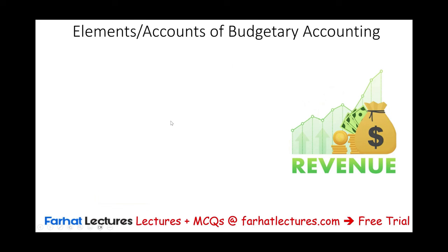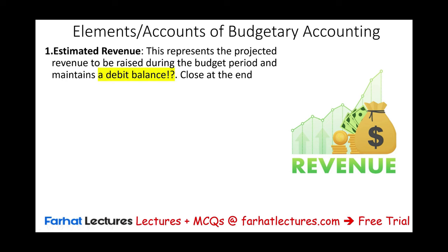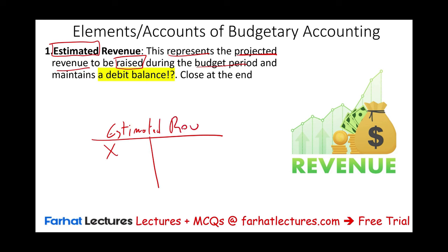The first thing we want to learn about a budget is the elements or accounts of budgetary accounting — the budget itself has its own accounts. The first budgetary account is called Estimated Revenue. This represents the projected amount of revenue to be raised and received during the budget period, assuming a year. This account — estimated revenue — is a debit balance. It's not a revenue account; even though it's called estimated revenue, it is a budgetary account with a debit balance. We close it at the end of the period.